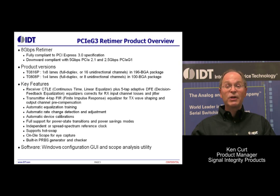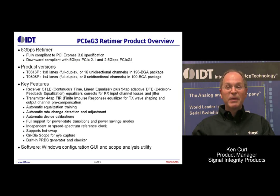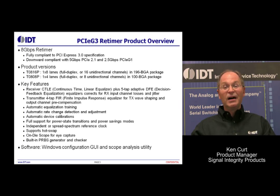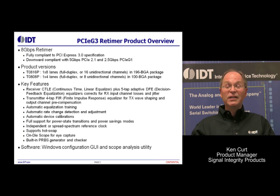PCI Express Gen3 can do that all automatically. As part of this instrumentation feature, you can output data to a Windows-based PC and view it under a GUI — a user interface that IDT also provides — so it's software accessible. Being software accessible makes it very convenient to debug with in the lab, and once the system is deployed in the field, you could even access the information remotely via the Internet. It's a very powerful tool built into this retimer.